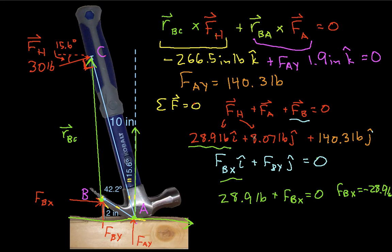And then for the vertical component, we have 8.07 pounds plus 140.3 pounds plus FBY is equal to 0. And we can solve this then for FBY being equal to 148.4 pounds, and this should be negative.